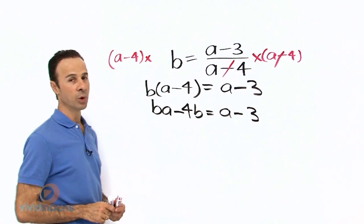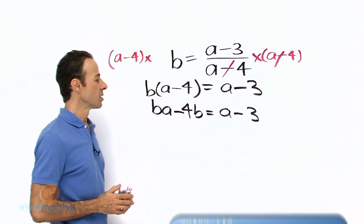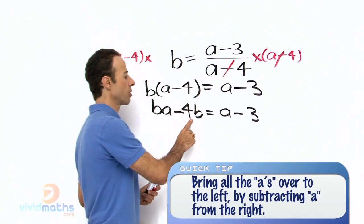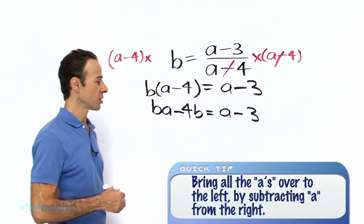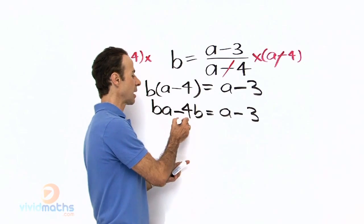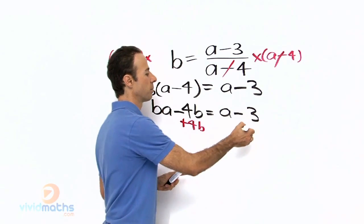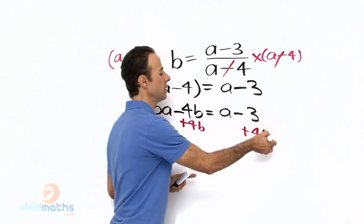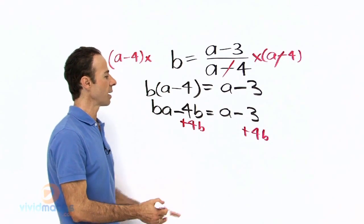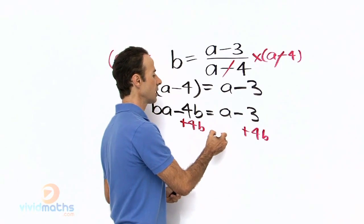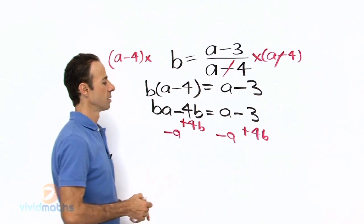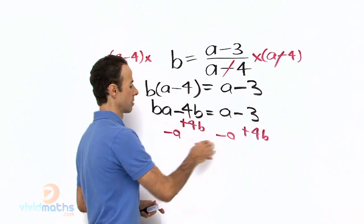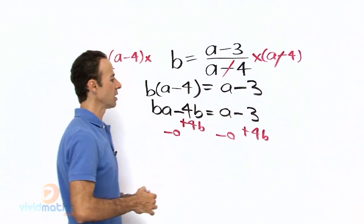Now what are we looking for? We are looking for getting the A's together, so what I am going to do is throw the 4B over that side and the A over this side. So the 4B we are going to plus 4B, and at the same time we are going to take away A.